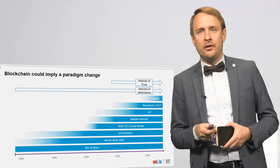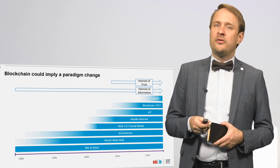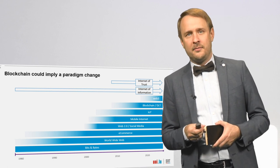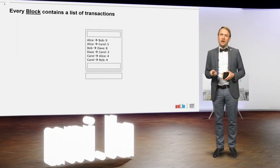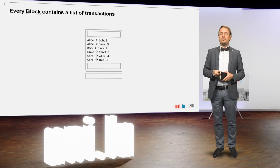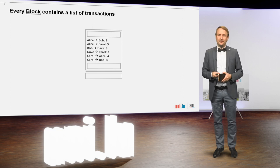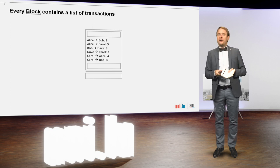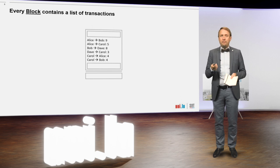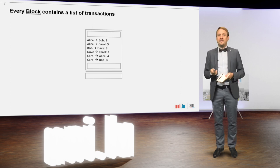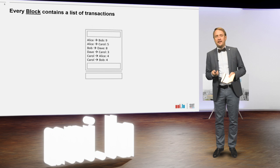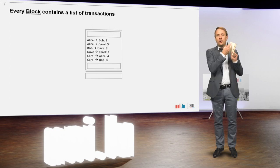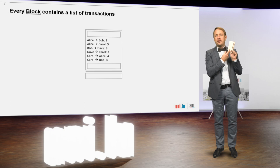But how does it work? To explain, I will use the easiest example: cryptocurrencies. The term blockchain consists of two parts — block and chain. A block is basically a page in our notebook. A block contains a list of transactions, like Alice to Bob: 9, Alice to Carol: 5, something like that. It is just a page in our book where people can add the transactions they want to do.